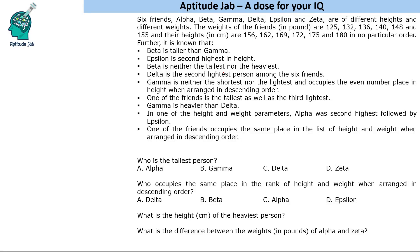We are not given the height or weight of any specific person. We are given conditions like second highest, second highest, third lightest, highest — those kinds of conditions. So what we can fill is just the ranks of these people. Let us not focus on the actual values; let us fill the ranks, and if needed, we can fill the values.